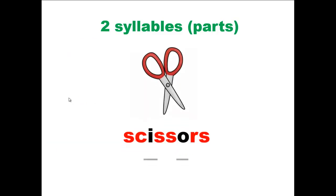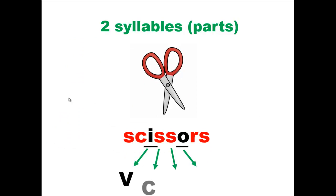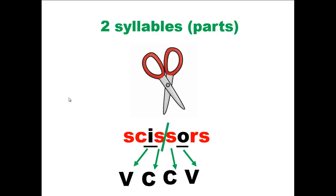Scissors. Here are the two vowel sounds. Let's start with the first vowel sound: vowel, consonant, consonant, and vowel sound. The word follows the VCCV pattern and should be divided between the consonants.